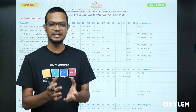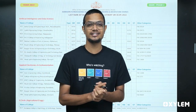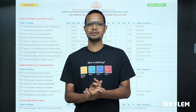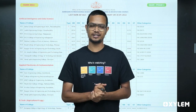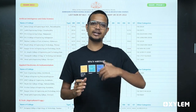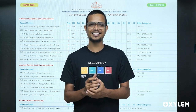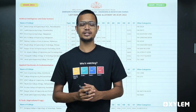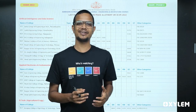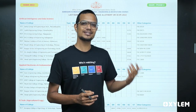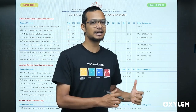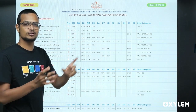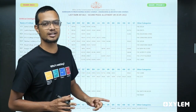Hi everyone. I have already published the engineering rank list. Now, what is the allotment procedure? After allotment, you will choose the course and the colleges. You will go through the first allotment and second phase allotment. If you have any problems, you can also check the official entrance commissioner's site.